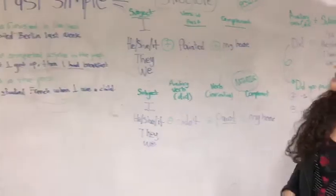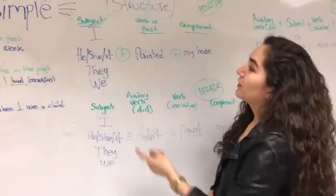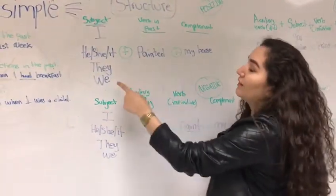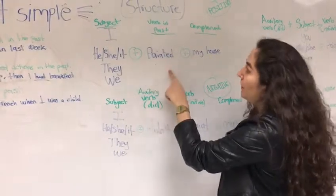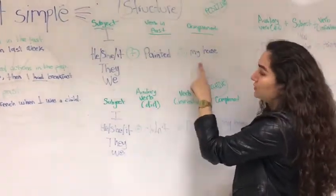But we can see the structure, and in the positive form, we have the subject, the verb in past, and the complement. I paint my house.